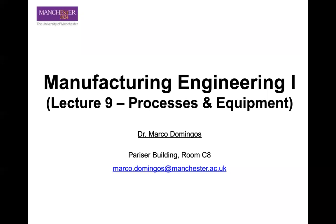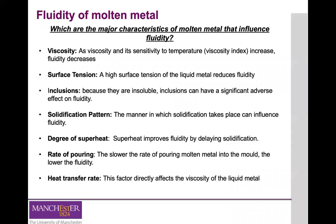Before we start with the contents of today's lecture, just a brief recap of the main points from the previous one. During the last lecture on Tuesday, we looked at the major characteristics of molten metal that can have an influence on fluidity. The capability of a molten metal to fill the mold cavities is defined as fluidity, which consists of two basic factors: the characteristics of the molten metal, and very importantly, the process parameters that you are defining for your casting process.